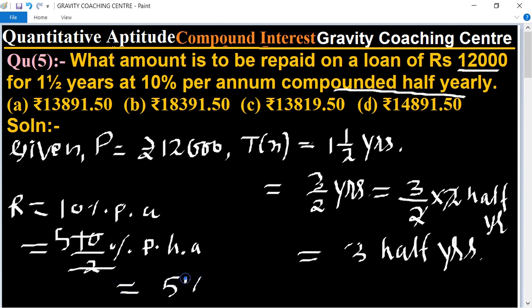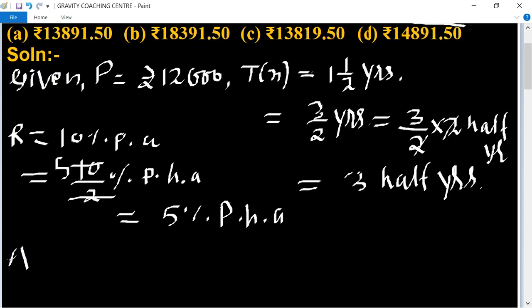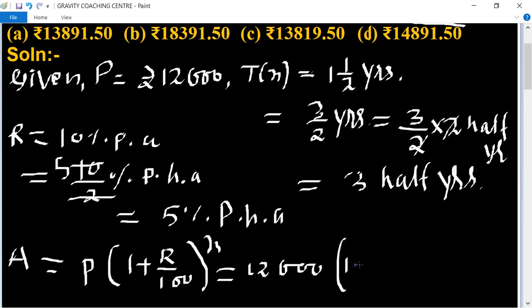Now we find Amount. The formula is: Amount equals Principal times (1 plus Rate upon 100) to the power n. So principal equals 12,000 and 1 plus rate is 5% per half annum for 3 half yearly periods.